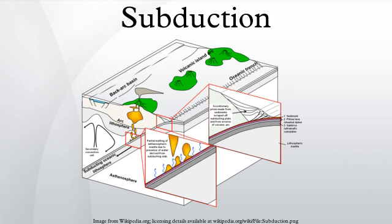Subduction zones are strongly asymmetric for the first several hundred kilometers of their descent. They start to go down at oceanic trenches.